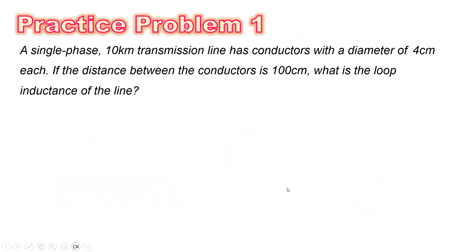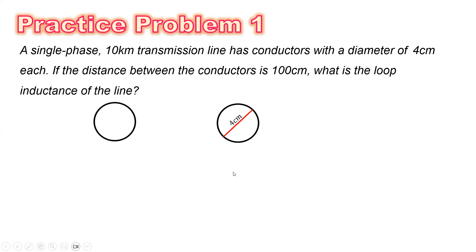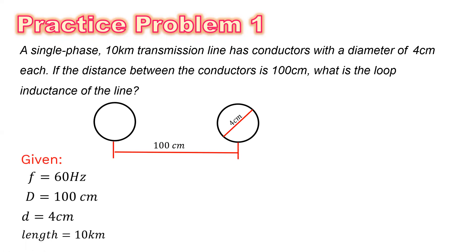So let us try to solve practice problem number one. A single-phase 10-kilometer transmission line has conductors with a diameter of 4 cm each. If the distance between the conductors is 100 cm, what is the loop inductance of the line? So the diameter of each conductor is 4 cm and they are separated at 100 cm in distance. The frequency is assumed to be 60 Hz, D is 100 cm, and the total length of the transmission line is 10 km. We are asked to solve the total inductance of the line.